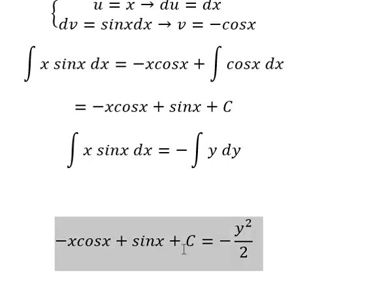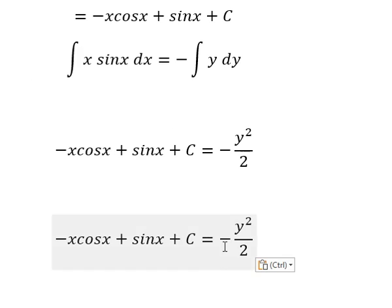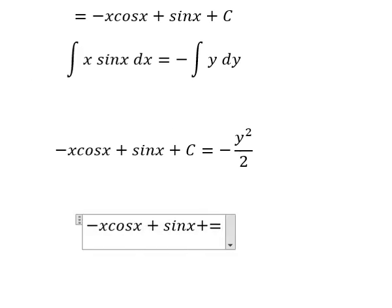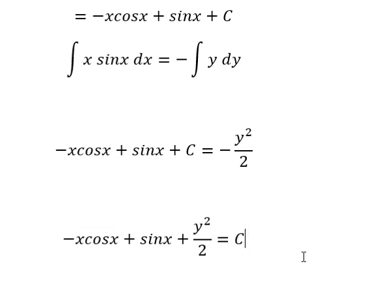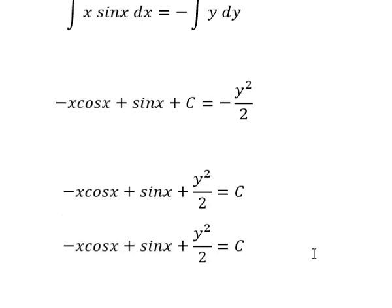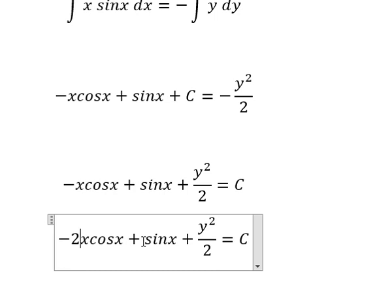And now I will put this one to the left and C here, because C can be positive or negative, so we don't need to have the sign. Then we multiply both sides by two.